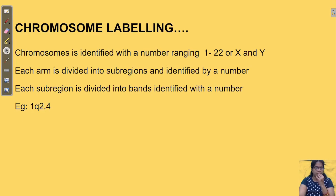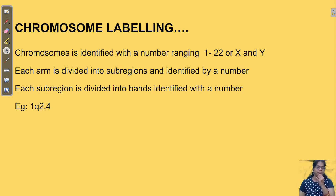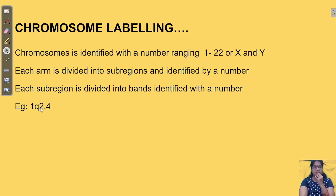Chromosomal labeling: a chromosome has two types of arms — P arm and Q arm. For example, if you are given 1Q2.4, what does that mean? 1 is the first chromosome. Q is the longer arm of the chromosome. 2 is the sub-region, and 4 is the band you are talking about. Each arm is divided into sub-regions, and each sub-region has a band. That is how a chromosome is labeled.